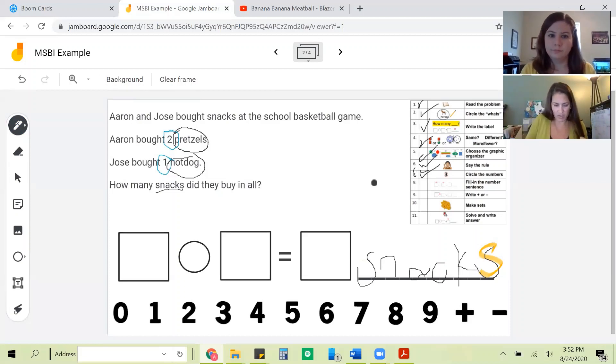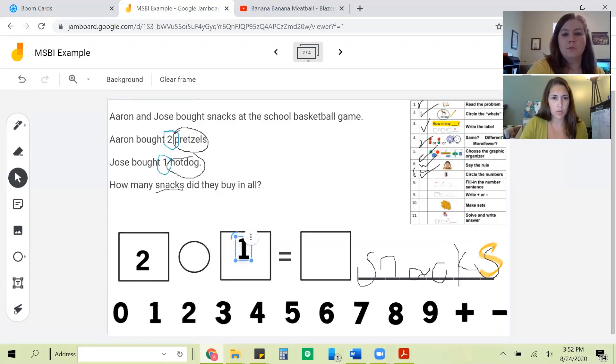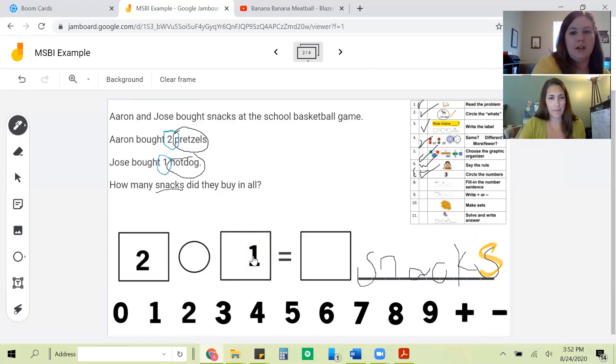Fill in the number sentence. Aaron bought one, two pretzels. Two goes first. Two goes first. You got it. One. Put one in the box. Put one in the box. Oopsies. There you go. All right. Mark it off our list.